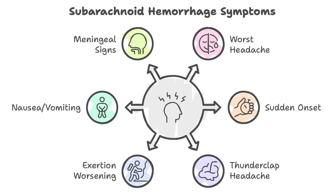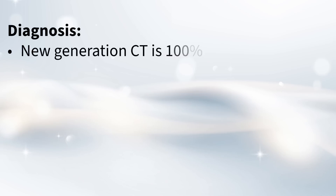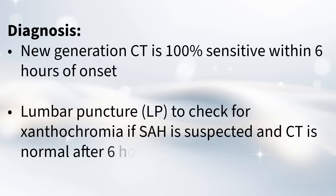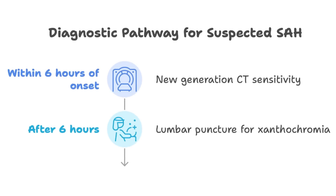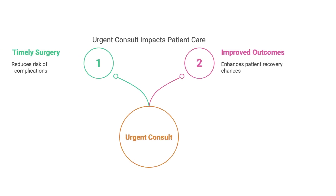Besides that sudden intense headache, the pain can get worse if you exert yourself, and it often comes with nausea and vomiting. There are also meningeal signs — basically signs that the membranes around your brain and spinal cord are irritated — including a stiff neck and pain when you bend your neck forward. A new generation CT scan of the head is really good at finding SAH, especially within six hours. If CT is normal after six hours, they might do a lumbar puncture to check cerebrospinal fluid for xanthochromia — a yellowish color meaning there's blood in the fluid. Treatment requires an urgent neurosurgery consult right away.